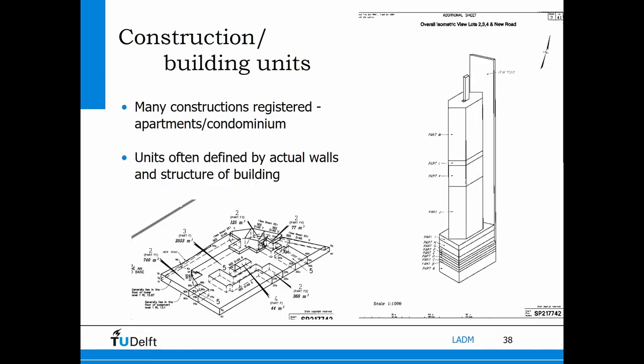Here we see an example of 3D volumetric parcels from Australia, from the state of Queensland. This is a survey plan which describes volumes — actually it's a building format survey plan, but it defines 3D parcels.